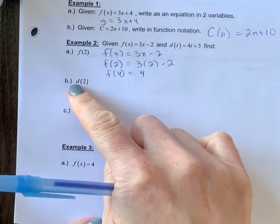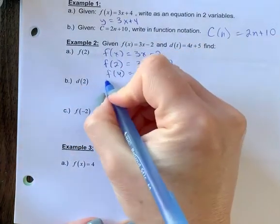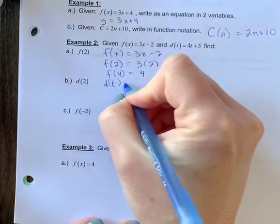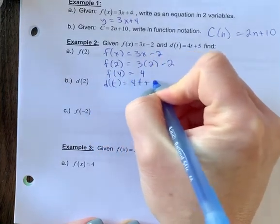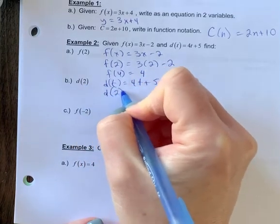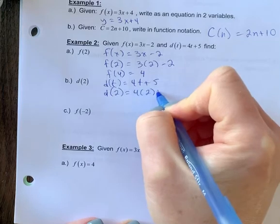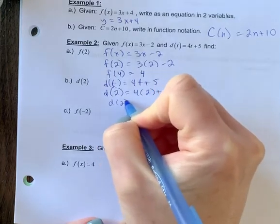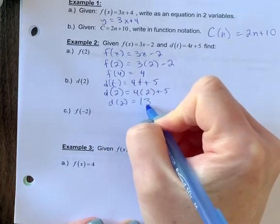B, d of 2. Because this is a d, we're using the d of t equation. So we're going to write that out. And every time I see a t, I'm going to now write a 2 because this is d of 2 we are finding. So d of 2 is equal to 8 plus 5 or 13.